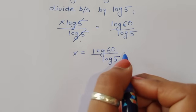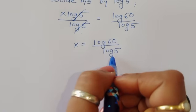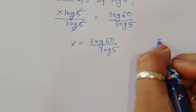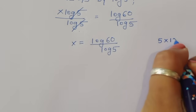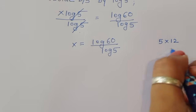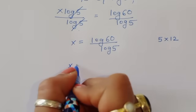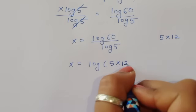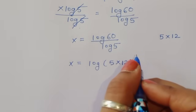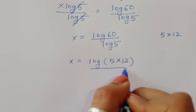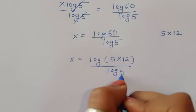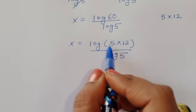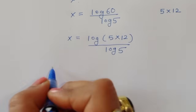Now log of 60 divided by log of 5. A factor of 60: we can write 5 times 12, since 5 times 12 is 60. So using this factor, we can write x is equal to log of 5 times 12 divided by log of 5.